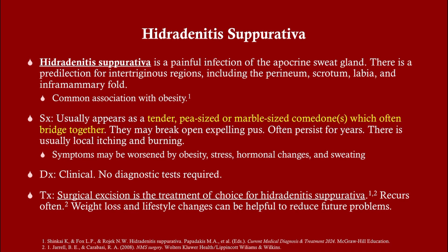Hidradenitis suppurativa is an infection of the apocrine sweat glands. It can happen in a variety of areas — it's usually an intertriginous area, meaning skin folds: the armpits, the leg pits, around the breasts, and of course the anogenital area. There is an association with obesity because you simply have more areas of the body compressed against each other, so weight loss is an important part of management.